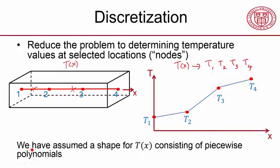In the process, what we have done is we have assumed a shape for our function, and that shape consists of piecewise polynomials, piecewise linear polynomials. The shape is constructed element by element. And in any finite element methodology, you do that. You're assuming a shape, and the shape is constructed element by element.